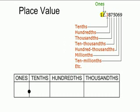Remember, all the numbers on the left of the decimal are whole numbers. To the right you have tenths, hundredths, thousandths, ten-thousandths, hundred-thousandths, millionths, and ten-millionths.